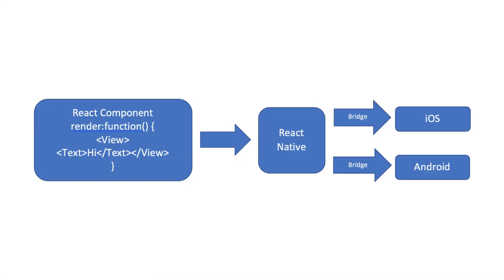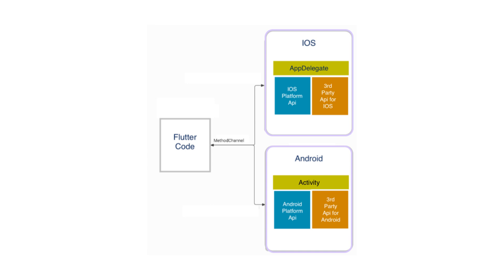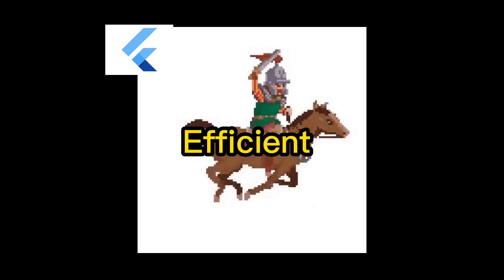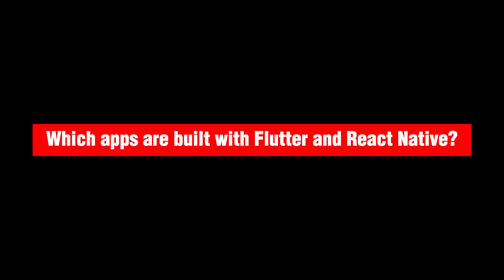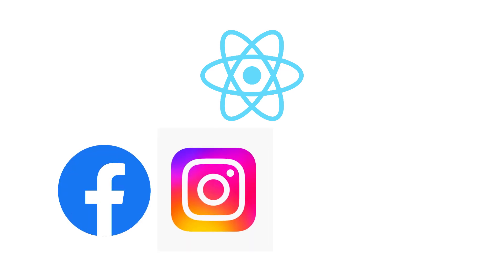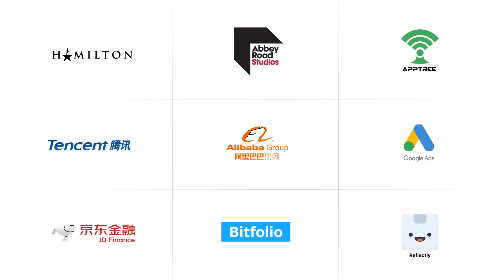React Native uses a bridge to communicate between JavaScript and native code, whereas Flutter does not require a bridge. This means Flutter is a little bit faster and more efficient than React Native in terms of performance. React Native is already used by big players such as Facebook, Instagram, Airbnb, and Uber, whereas Google Ads, Alibaba, and many more are built with Flutter.